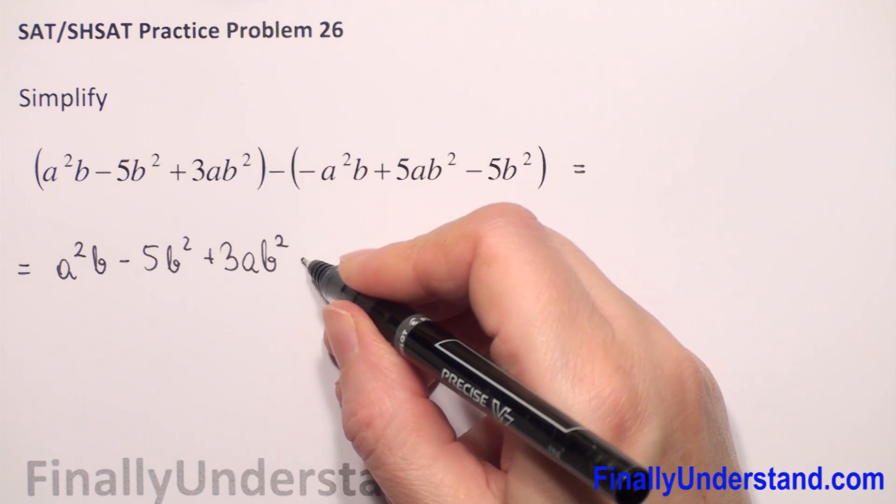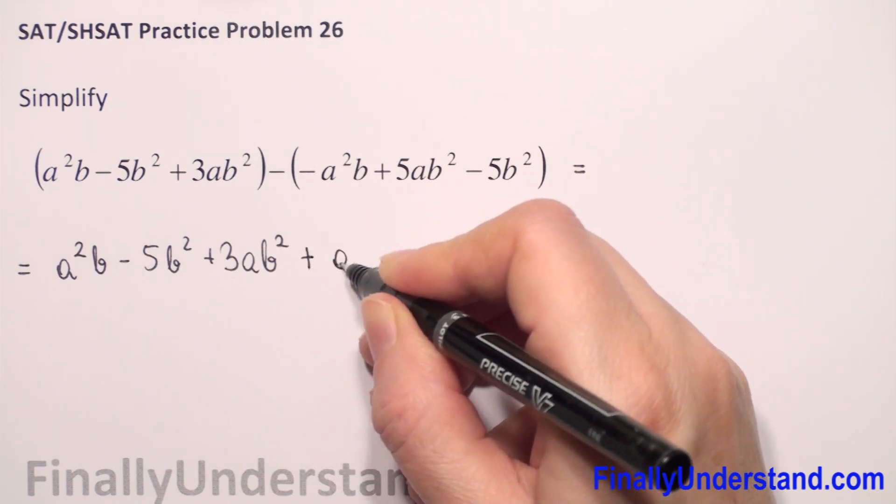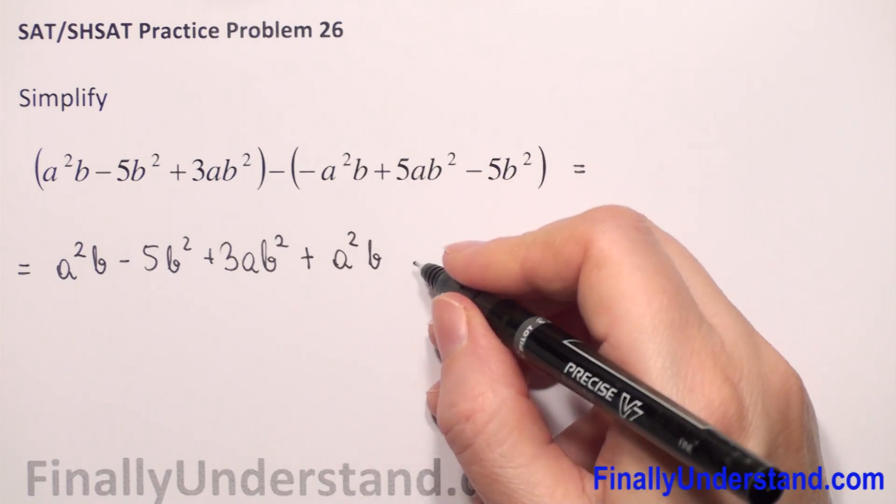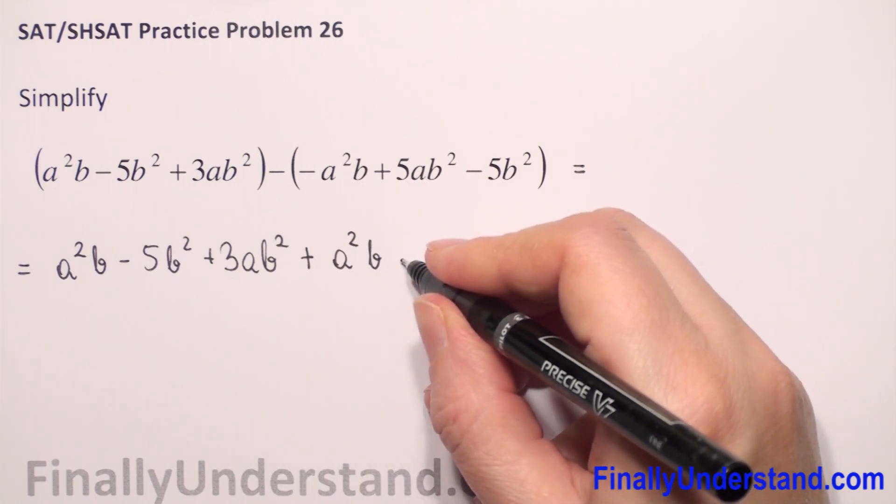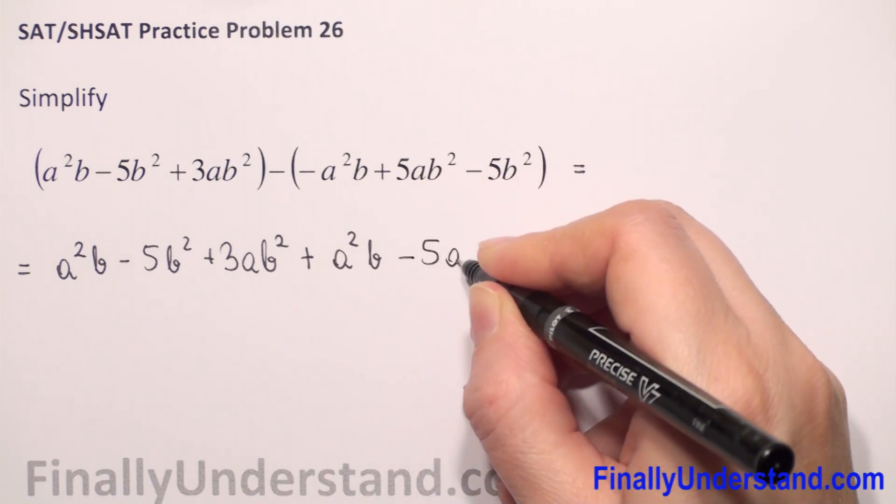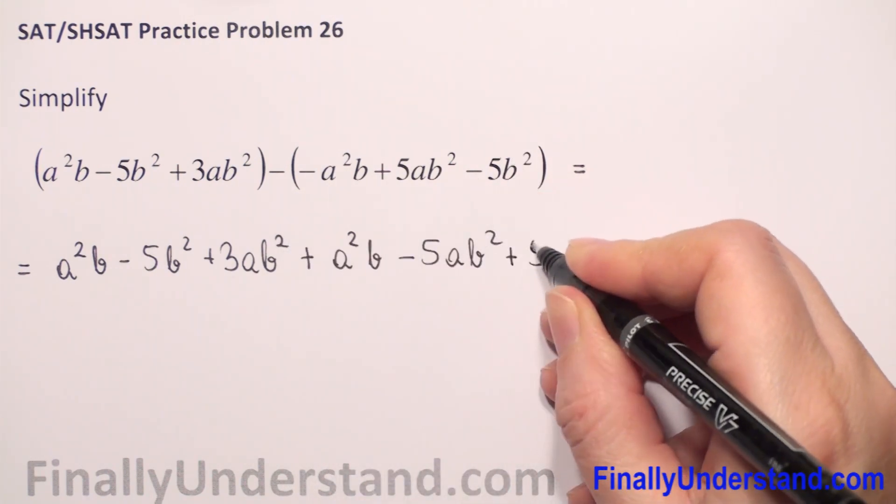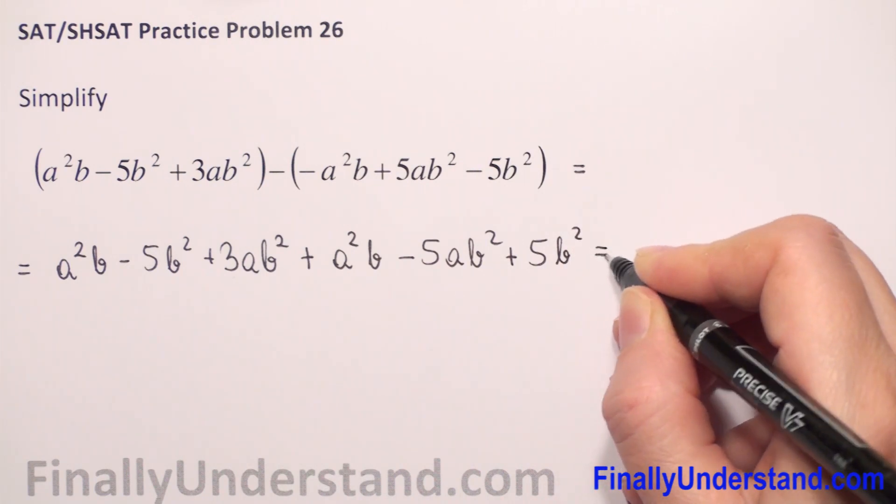So negative and negative will be positive a²b. Negative and positive will be negative 5ab². Negative and negative will be positive 5b². This is equal.